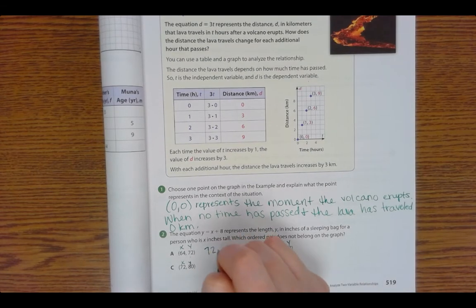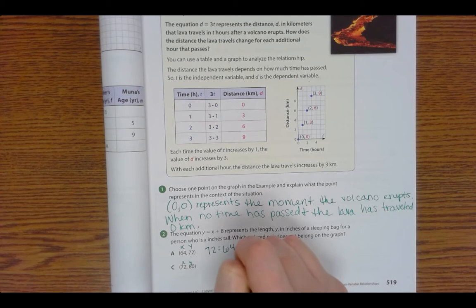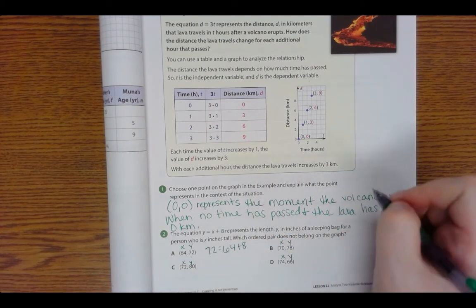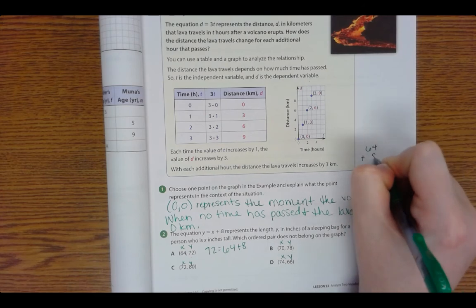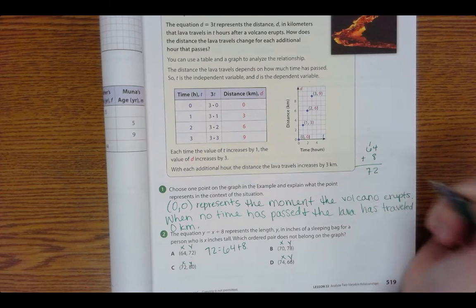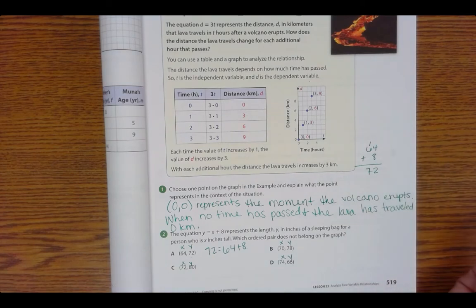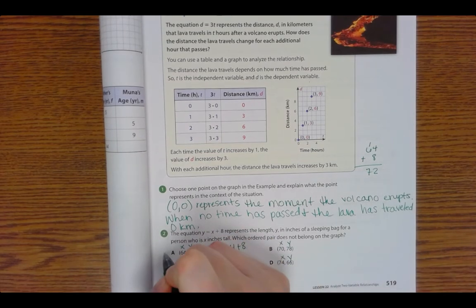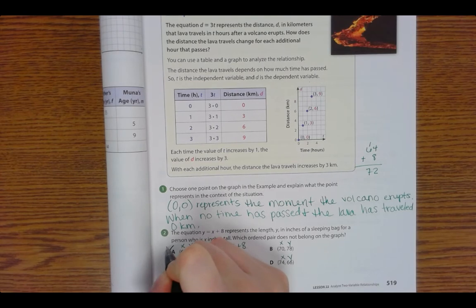So y equals x plus 8. So 72 equals 64 plus 8. 64 plus 8, 8 plus 6 equals 12, carry the 1, 6 plus 1 is 7. So is that one true? Yep. This one does belong on the graph, so that's not our answer.